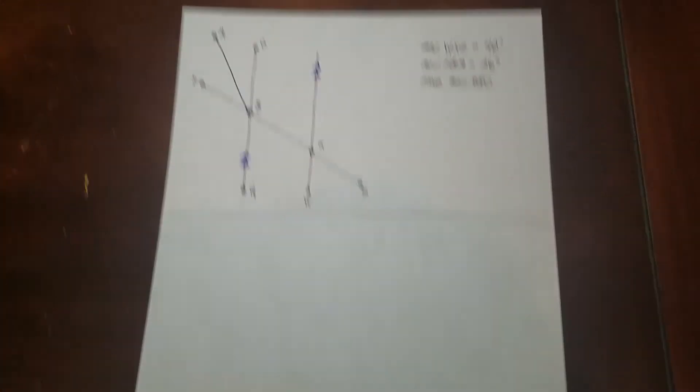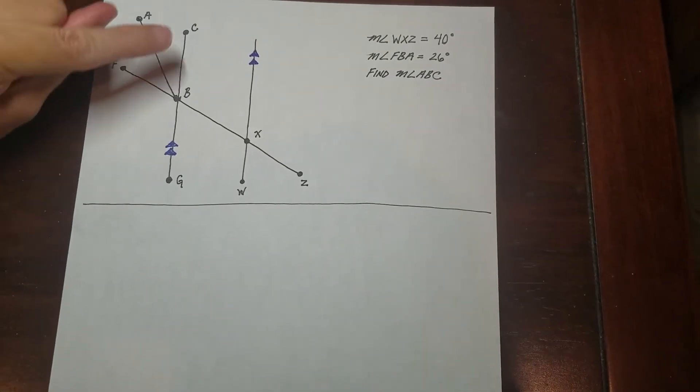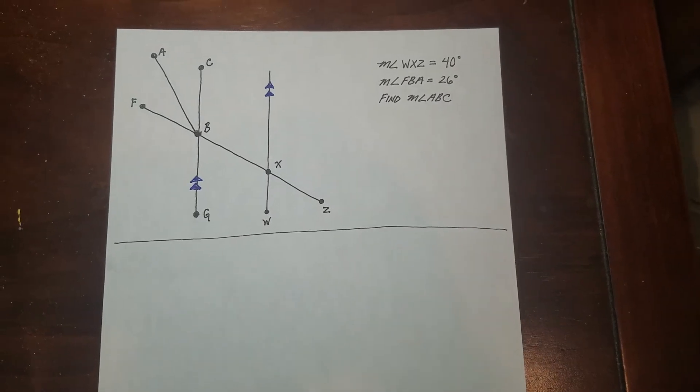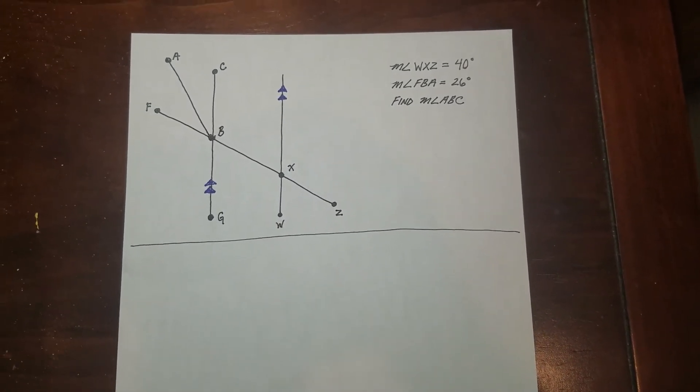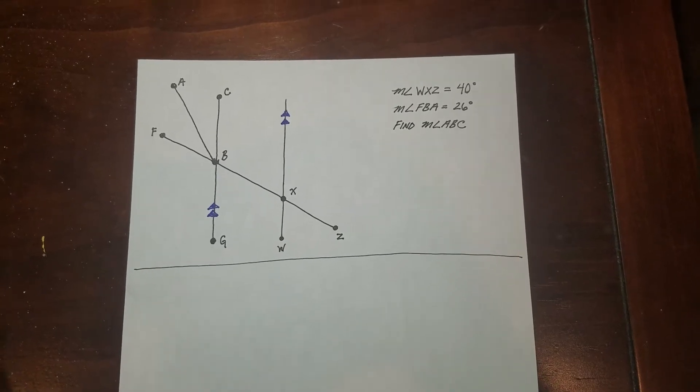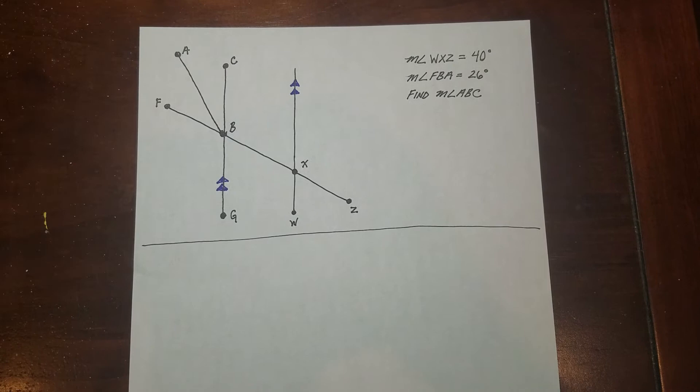Okay, so we're going to be working on a two-column solution to this. As you can see, it has these marks here indicating that these two lines are parallel.